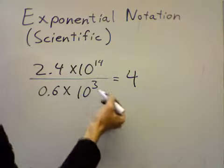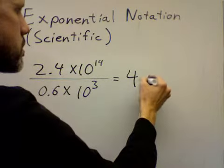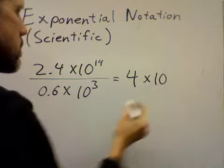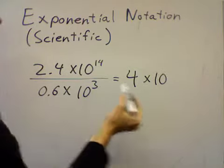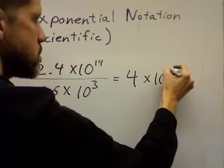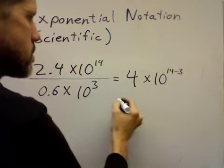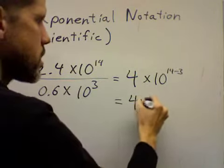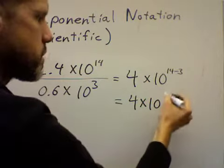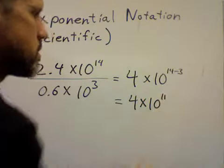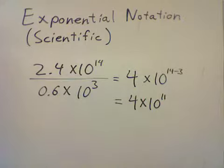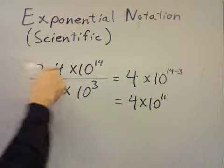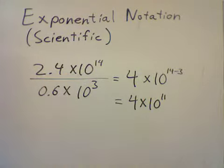Now, if I divide 10 to the 14 over 10 to the 3, then I get 10 to the 14 minus 3. That is equal to 4 times 10 to the 11, since 14 minus 3 is 11. So 2.4 times 10 to the 14 over 0.6 times 10 to the 3 is 4 times 10 to the 11.